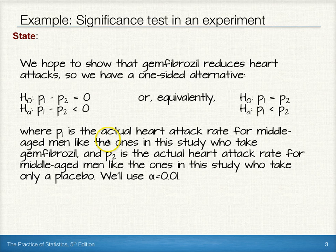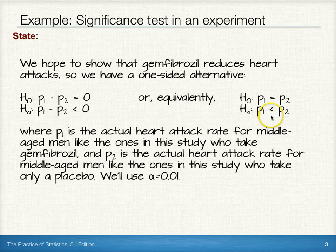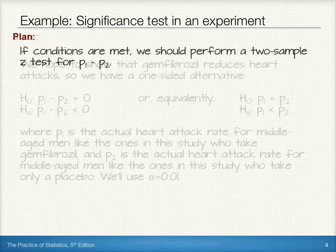In this case, we'll define P1 to be the actual heart attack rate for middle-aged men like the ones in the study who take the drug gemfibrozil, and P2 is the actual heart attack rate for middle-aged men like the ones in the study who take only a placebo. Because of the way we've defined them, we want to show that P1 is less than P2, or the difference P1 minus P2 is less than 0. We'll use alpha equals 0.01.